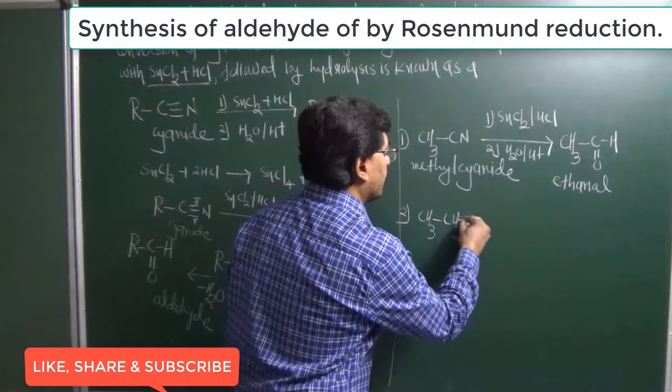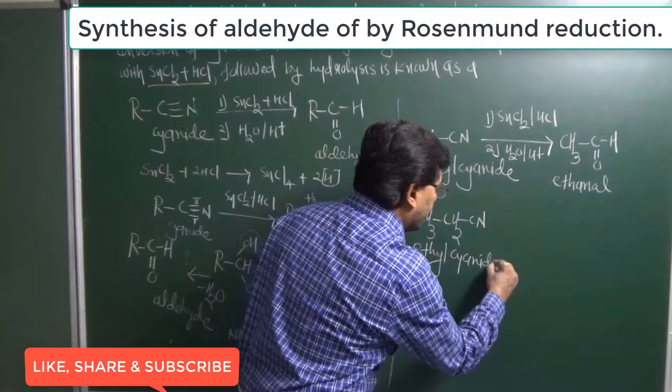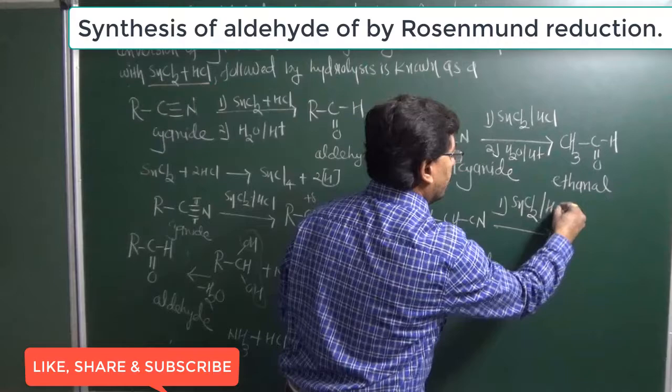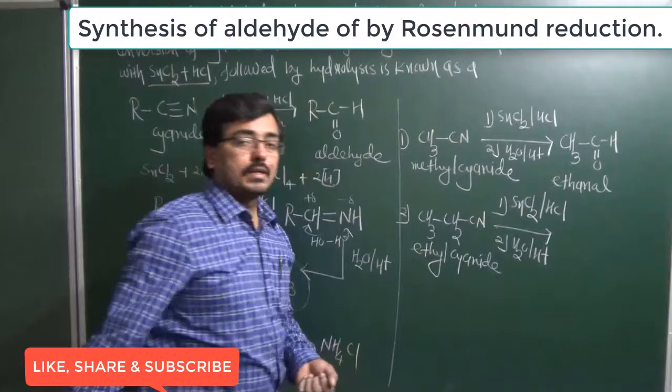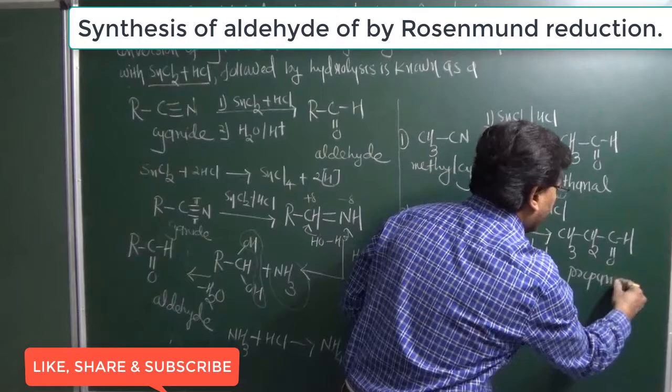Another example: we have CH3CH2CN. The IUPAC name of this structure is propanenitrile; the common name is ethyl cyanide. Using the Stephen Reaction — reagent SnCl2 in HCl followed by hydrolysis in acidic medium — it gives us CH3CH2C double bond O-H. This three-carbon structure is propanal.